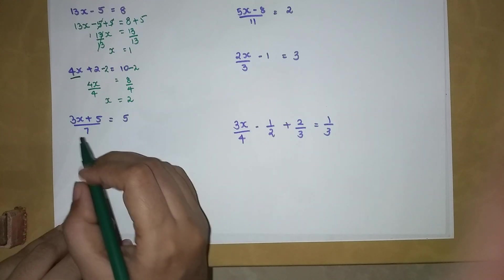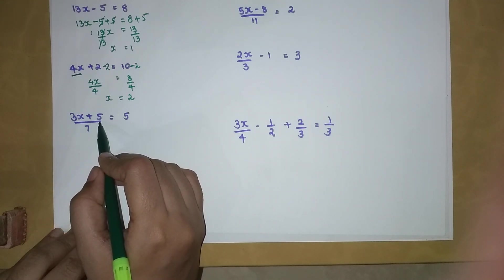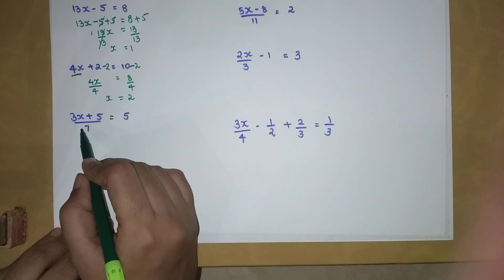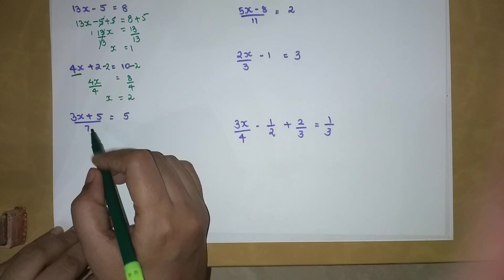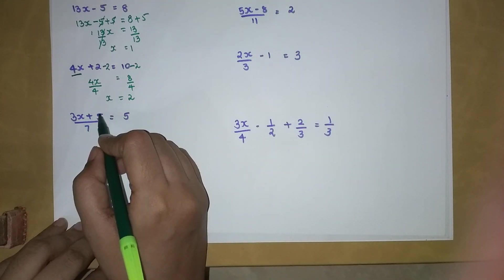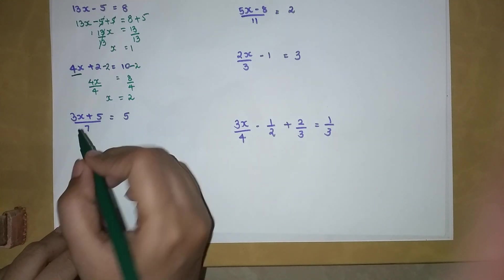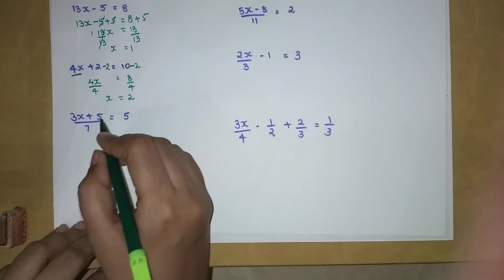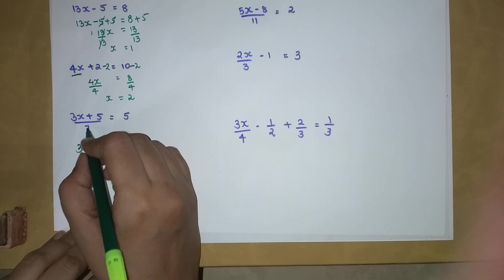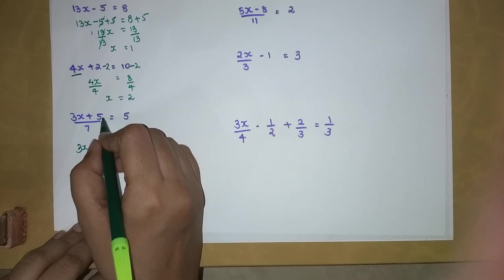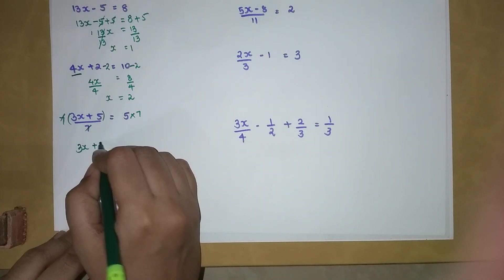When you have a number in the denominator that covers the entire LHS — meaning it is dividing all the variables and constants on the left — you cannot shift the 5 directly to the other side, because the 7 is also dividing it. You would be shifting 5 divided by 7, not just 5. So the first step is to get rid of the 7 from the denominator by multiplying both sides by 7. The 7s cancel, giving us 3X plus 5 equals 35.